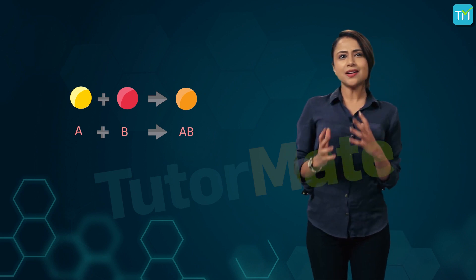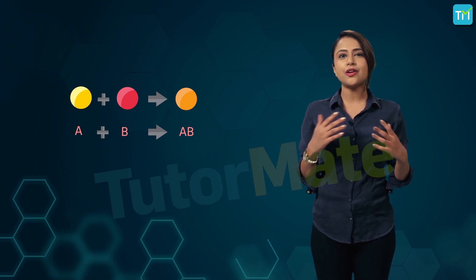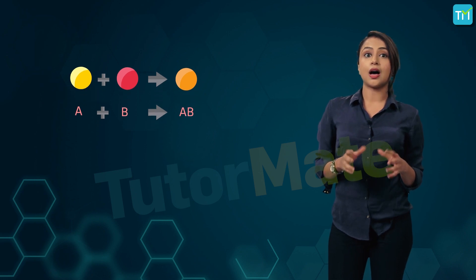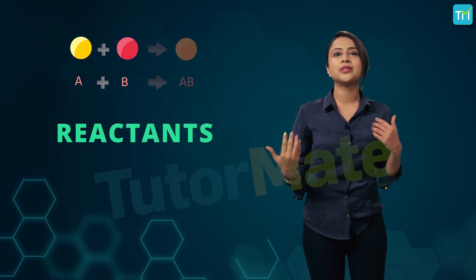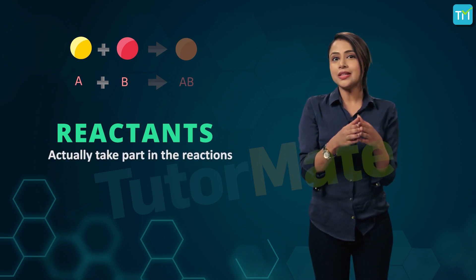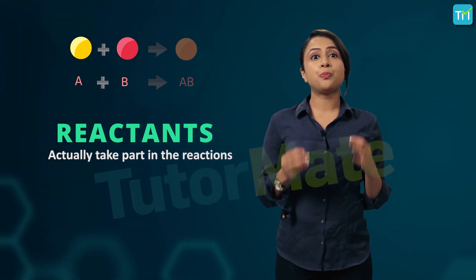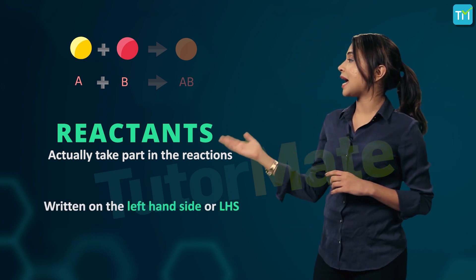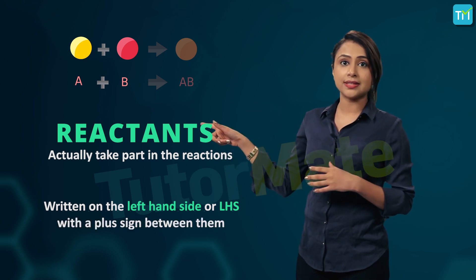To better understand chemical reactions, it will help if we first walk through the various parts of the reaction itself. First, what we start with are the reactants. These are the substances that react with each other and actually take part in the reaction. You can think of these as the ingredients of the reaction — what you put into the reaction — and they are always written on the left hand side, or LHS, in an equation with a plus sign between them.